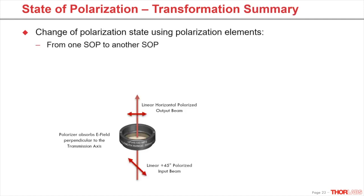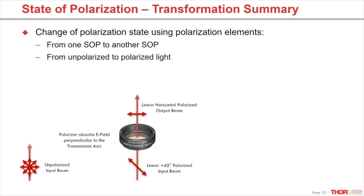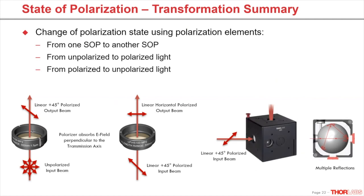In the last slide we saw the transformation from one state of polarization to another using polarizing optical elements. Here, an example from a linear plus 45 degree to linear horizontal. Polarizers have a transmission axis. The field vectors that are not aligned with this axis can get absorbed. It is also possible to turn unpolarized light to polarized light using a linear polarizer. The other way around is to depolarize polarized light by using an integrating sphere. Due to multiple reflections inside the sphere, time and space information of the electric field gets lost, resulting in unpolarized light at the output port.